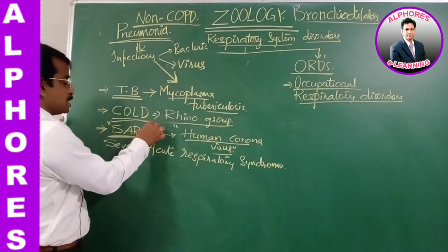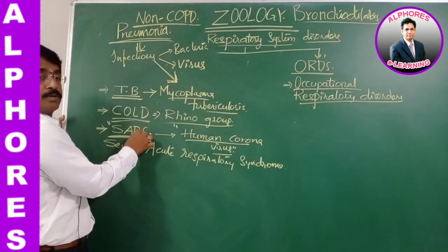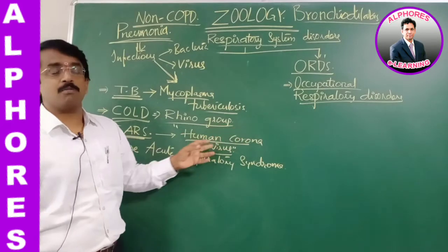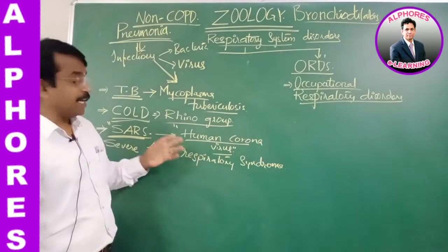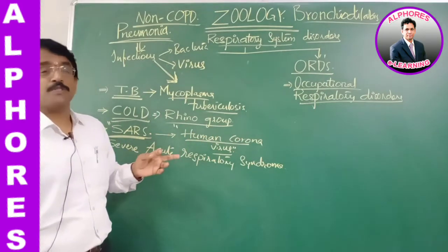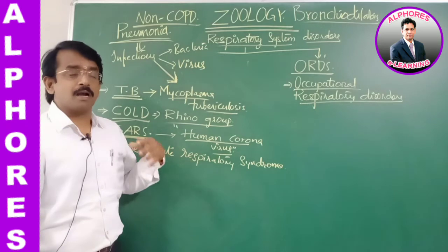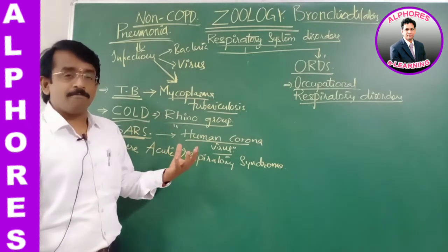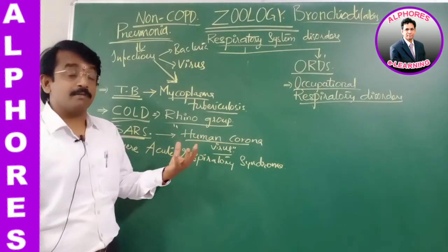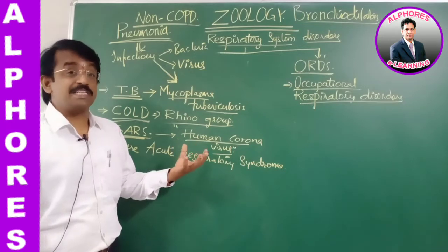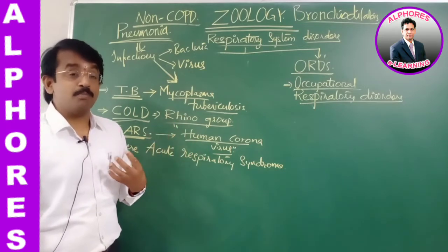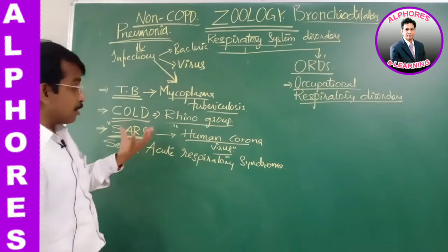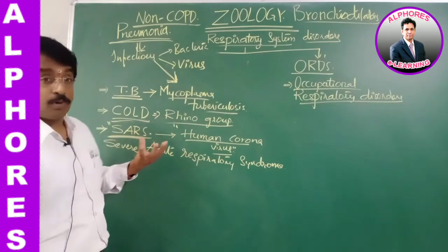SARS is severe acute respiratory syndrome caused by human coronavirus, affecting the respiratory tract. Symptoms include sneezing, continuous running nose, cough, and high fever. Within 3 or 4 days it reaches maximum severity, and body pains also occur. These are the symptoms one faces.